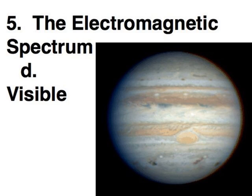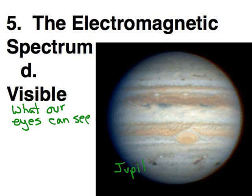Now we're to the visible spectrum. So obviously, this is what our eyes can see. And our atmosphere is transparent to the visible spectrum. Here we see Jupiter in a visible image.